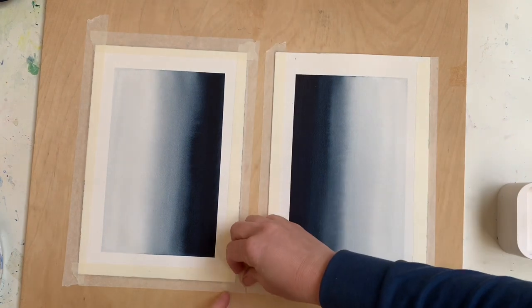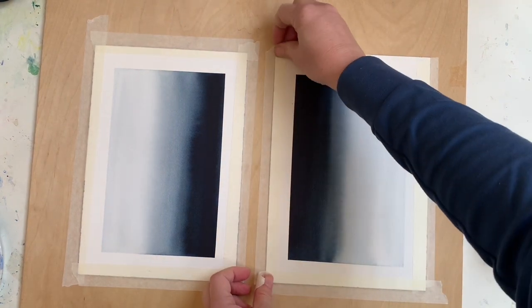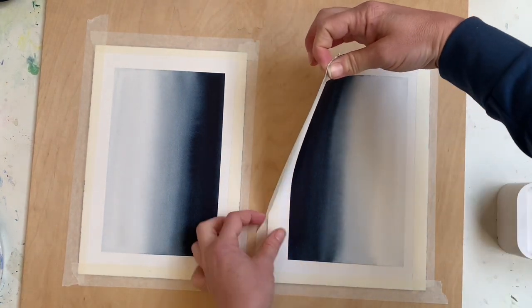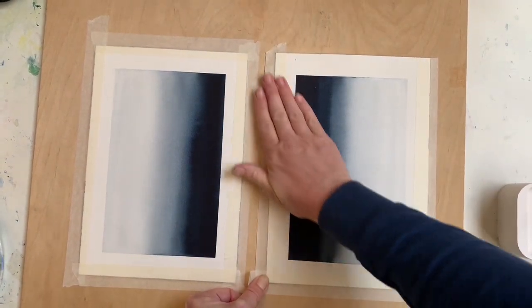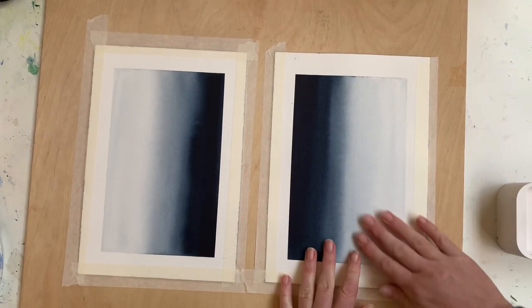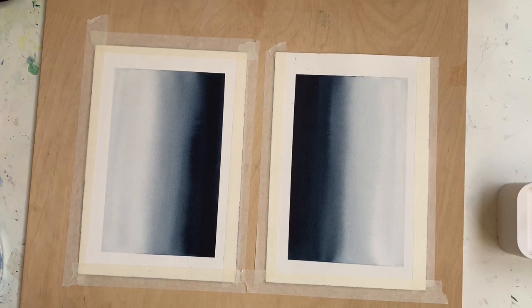Again re-sticking that down. Sometimes what happens is the paper continues to expand as you're doing this and it doesn't go down flat, so that's why I'm lifting the tape off and repeating it. Now I'm going to finish it off by doing the top.